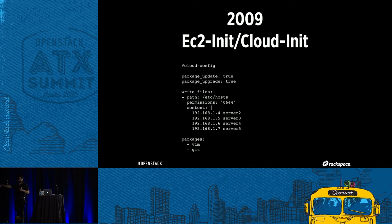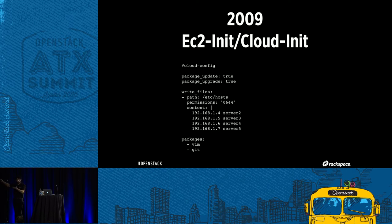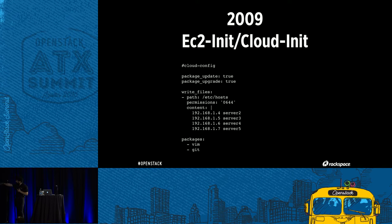Cloud-init really changed the game because it introduced the concept of cloud config. This is in YAML format, and the reason why it's amazing is that it doesn't matter if you spin up Ubuntu, Fedora, or SUSE — a package update is a package update. On Ubuntu it uses APT, on SUSE it uses Zypper, on CentOS maybe YUM, Fedora maybe DNF. It's an abstraction — it doesn't matter what type of instance you spin up. You can specify packages to install, and even write files like the /etc/hosts file.